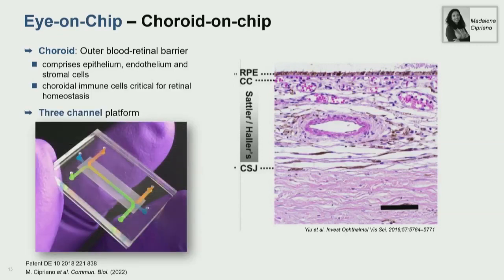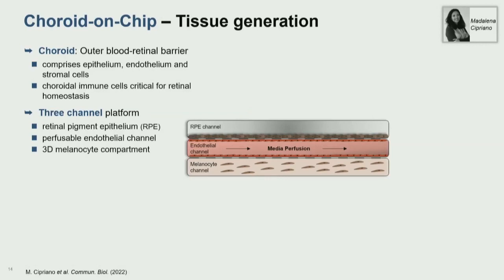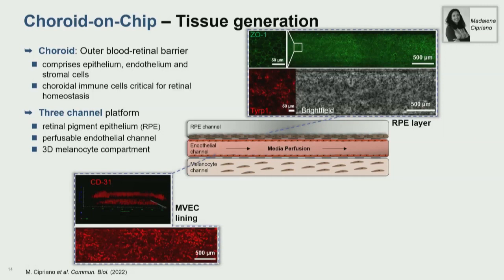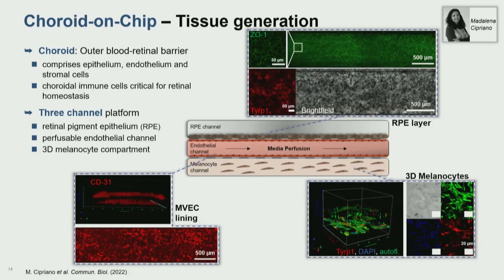The system is a three-channel chip. From the side: the top channel is the retinal pigment epithelium — here we use iPSC-derived RPE — then we have a perfused central channel for the endothelium, and a 3D lower channel where we inject melanocytes in hydrogel. The RPE forms nice tight junctions throughout the entire channel length and shows strong melanin production, which is critical for many functions. The central channel is lined with microvascular endothelial cells isolated from skin biopsies.